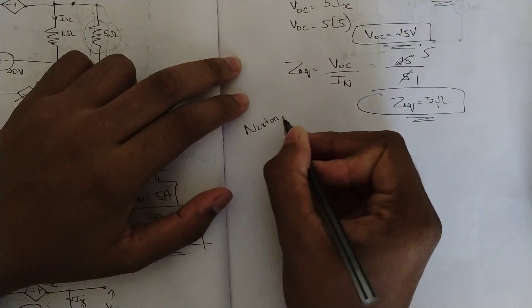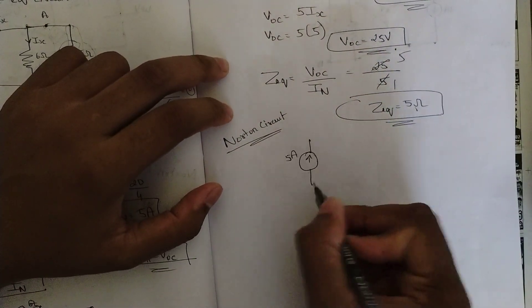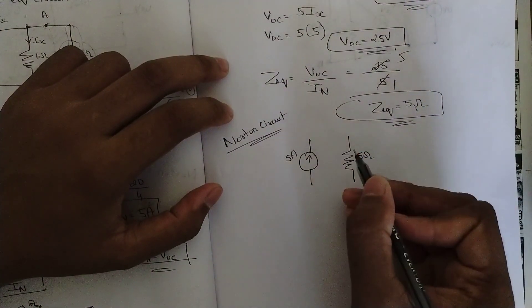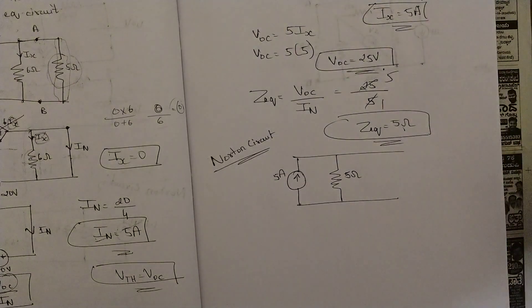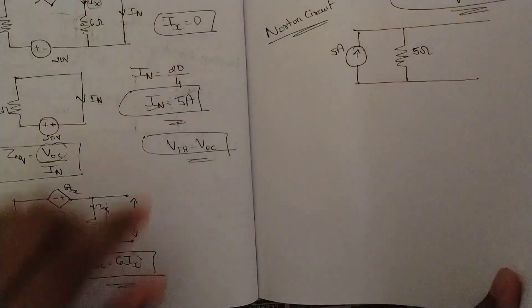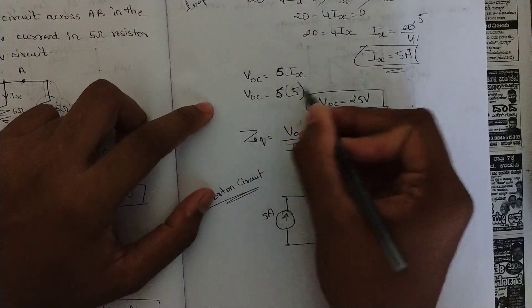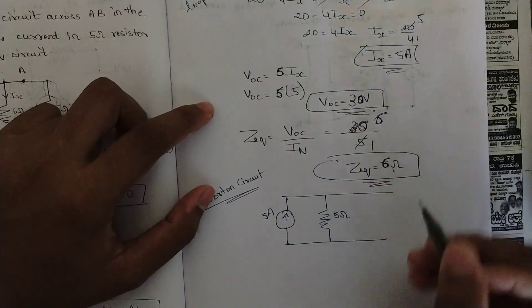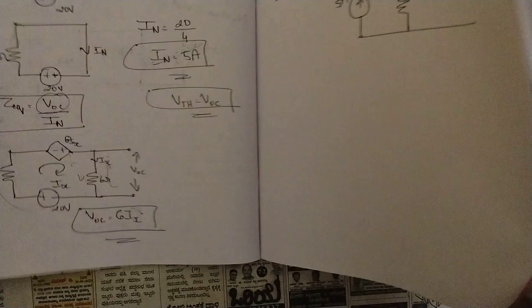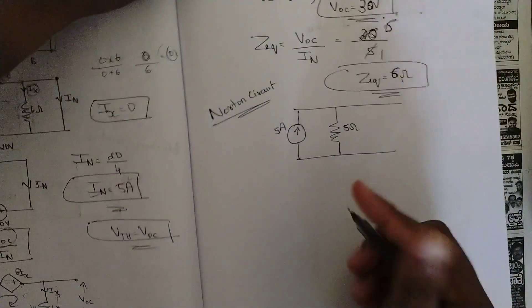The Norton's equivalent circuit is: a 5 ampere current source in parallel with Z equivalent of 6 ohms. I had made a mistake earlier writing 5·ix — it should be 6·ix — so VOC = 30 volt and Z equivalent = 30/5 = 6 ohms. Please make that correction; I was in a hurry. So the Norton impedance is 6 ohms.